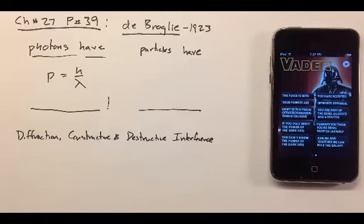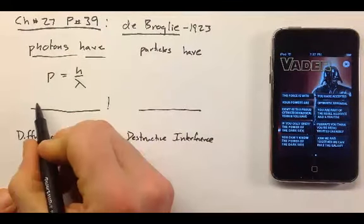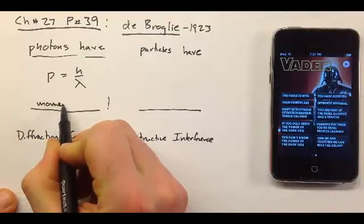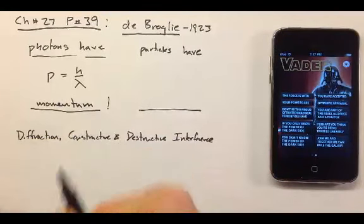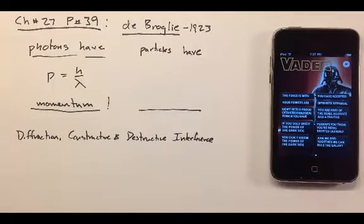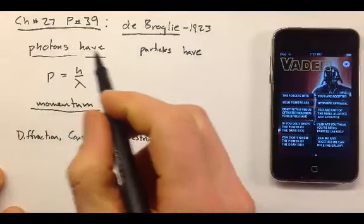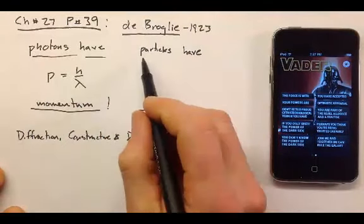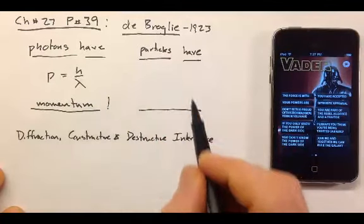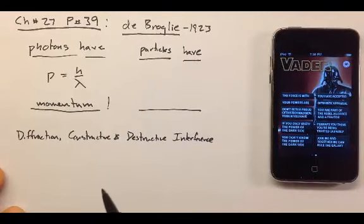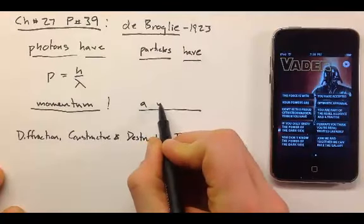Now we learned last time that photons have momentum, right? And this was crazy. How can something without mass have momentum? That's just really weird. Well, a lot of turn-of-the-century physicists didn't know what to do with these ideas, except come up with more ideas. And here's what de Broglie said. If photons have momentum, then particles can have a wavelength.